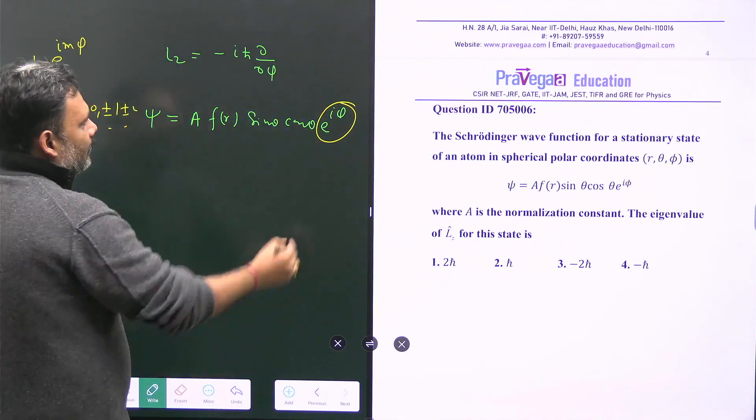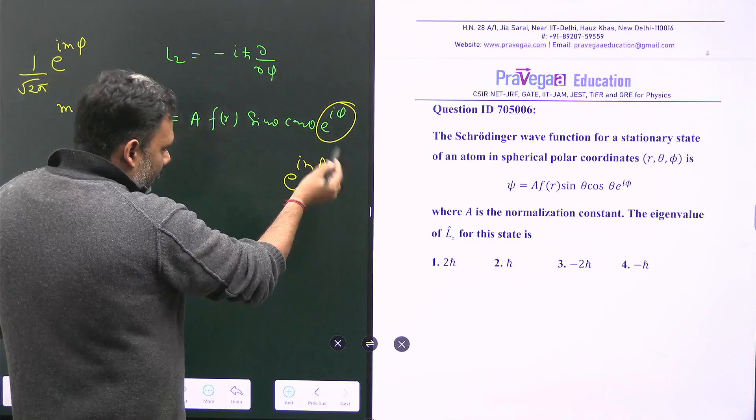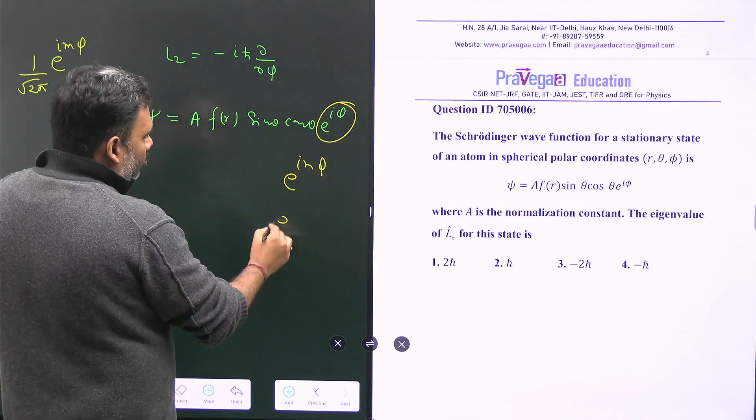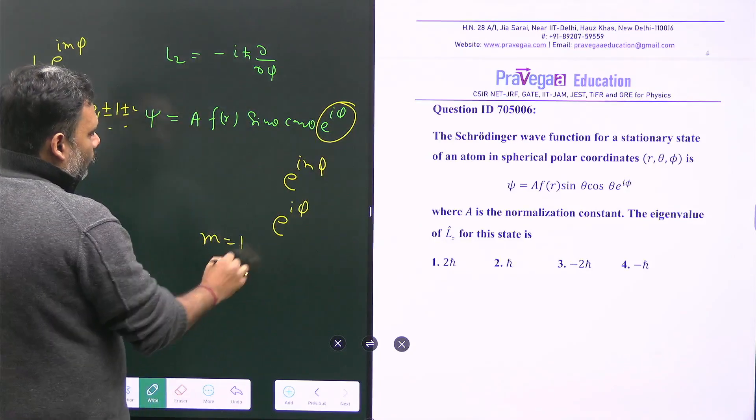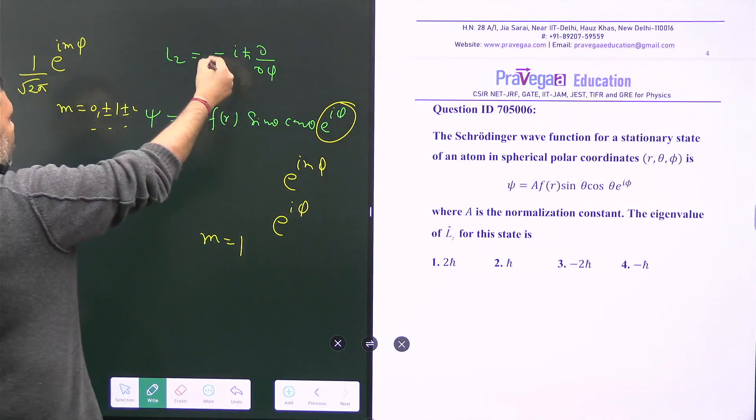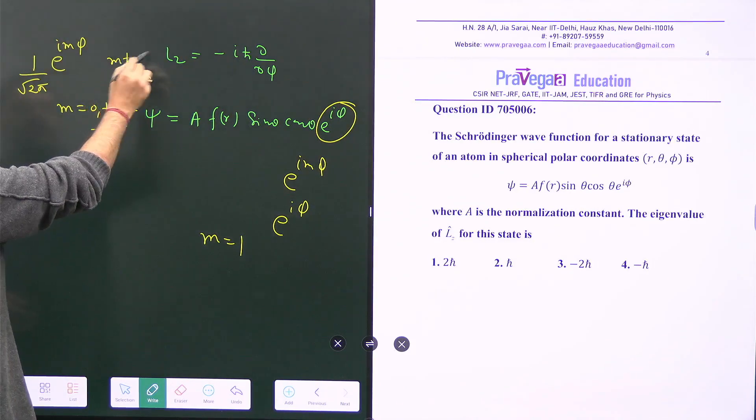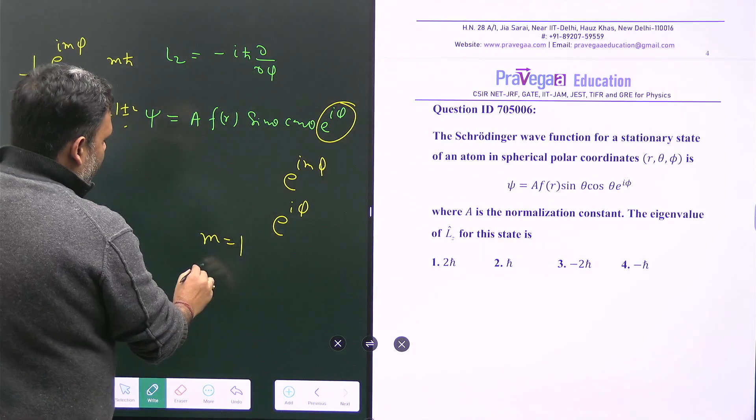Here we have e^(imφ). If we compare it with e^(iφ), then m = 1. So what will be the eigenvalue? The eigenvalue of Lz for this eigenstate is equal to mℏ, and from there the answer is ℏ.